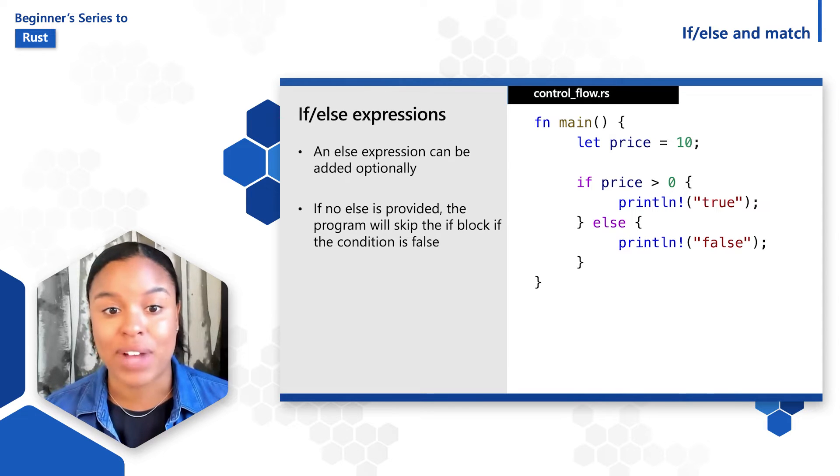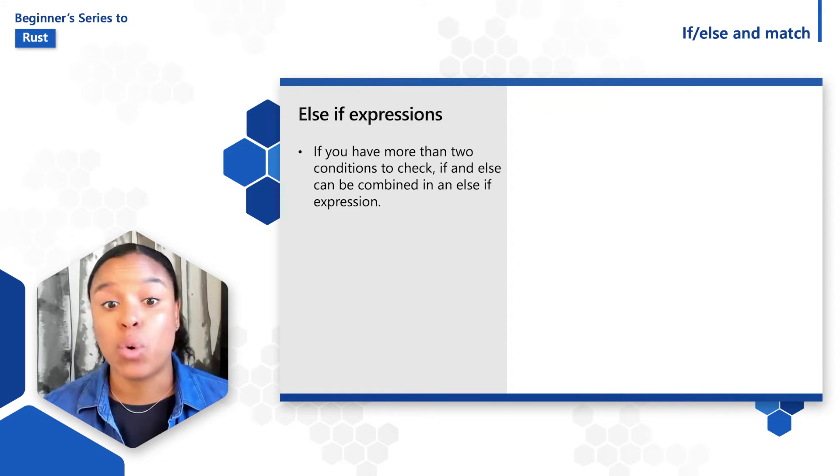If no else is provided, the program will skip the if block if the condition is false and move on to continue executing the program. If you have more than two conditions to check, if and else can be combined in an else if expression.